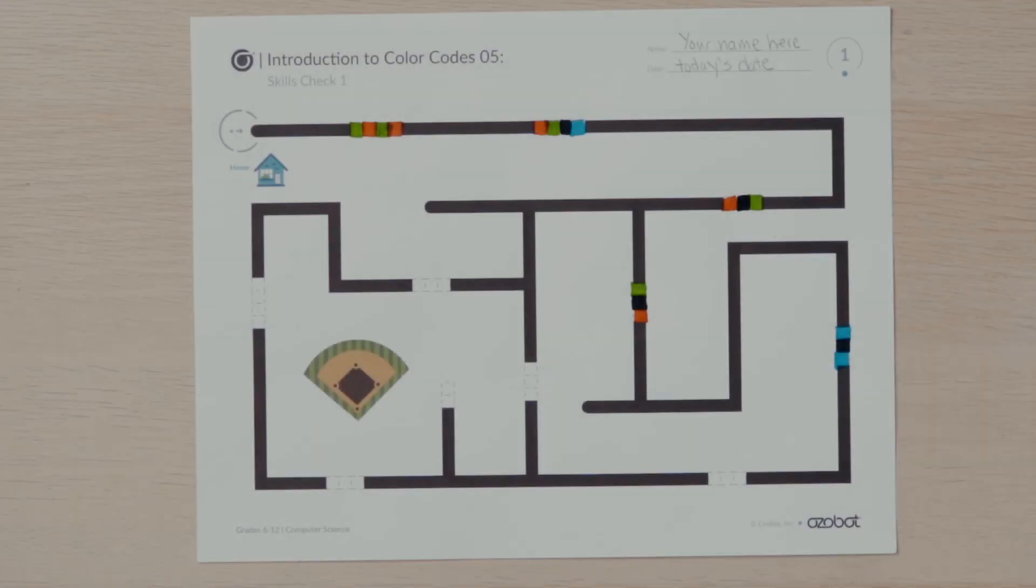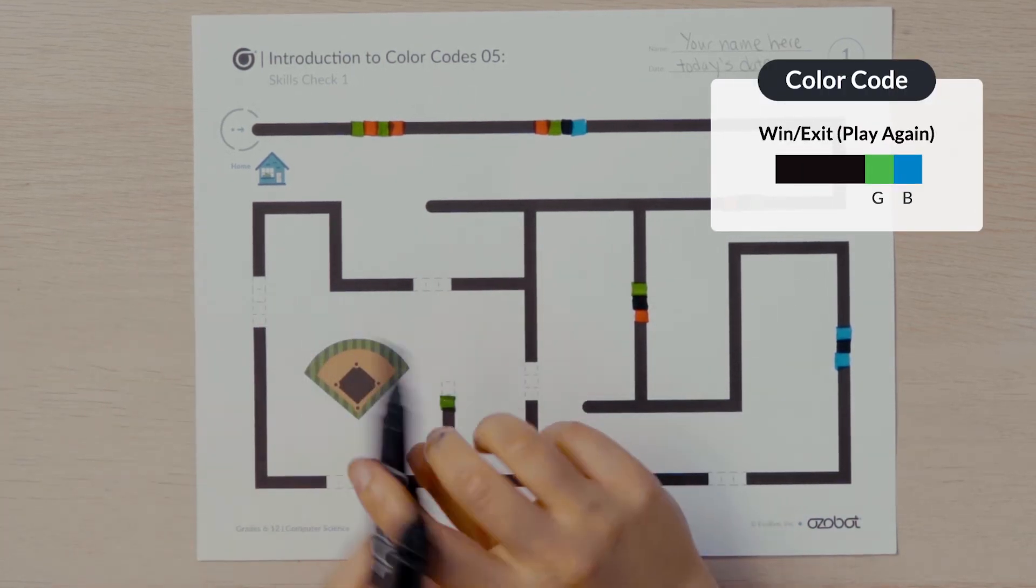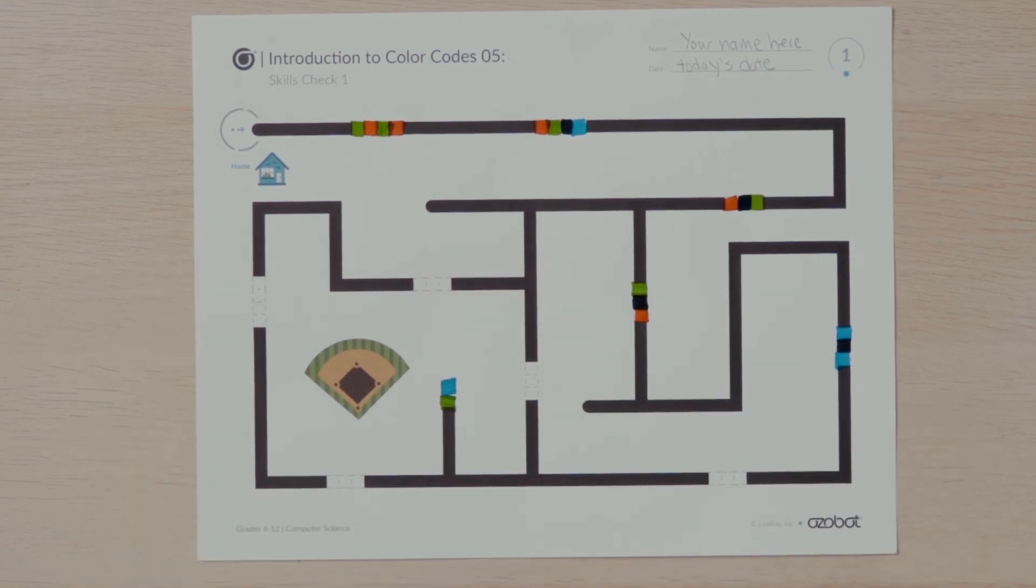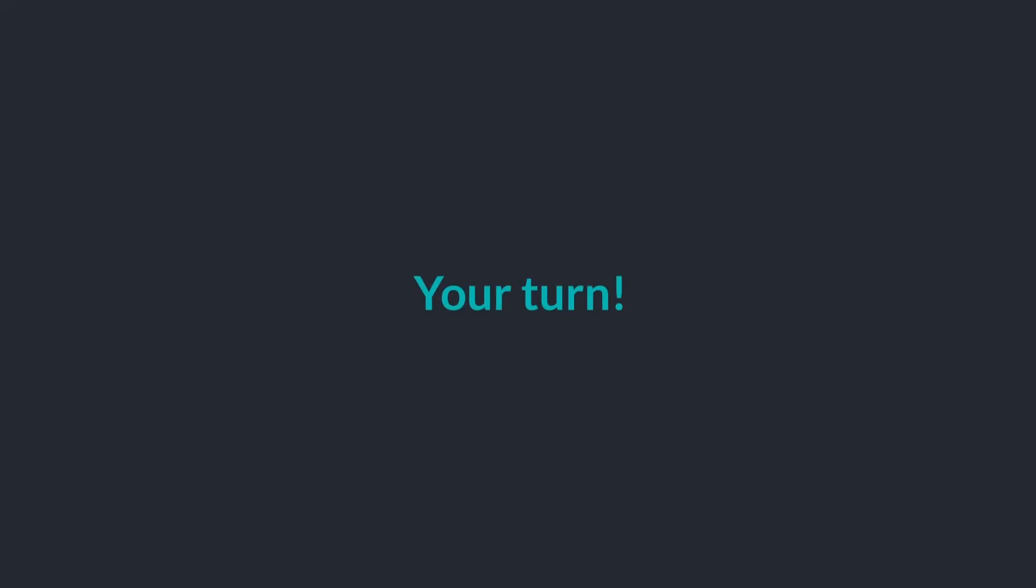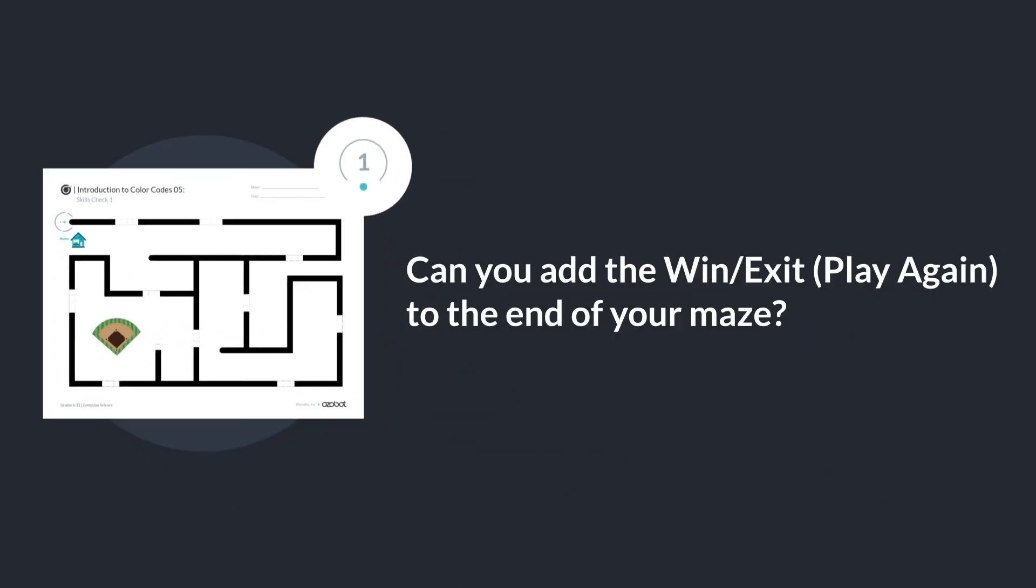The very last color code on the maze next to the baseball game is two blocks. Only line end codes have two color blocks. In this case, I'll use a win exit play again code. The code is green blue. Be sure green is the first color your bot will see as it runs over the code. Can you add the last color code to your maze? Can you add the win exit play again color code to the end of your maze?